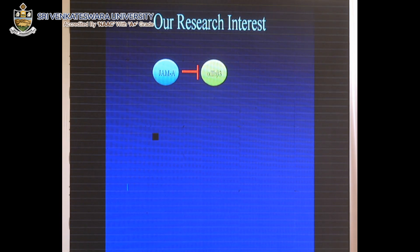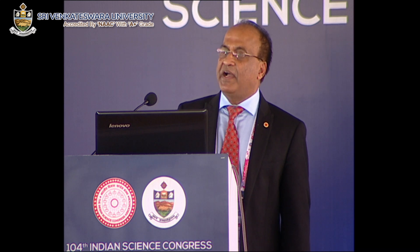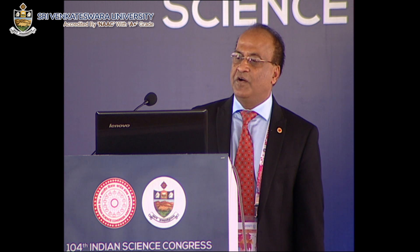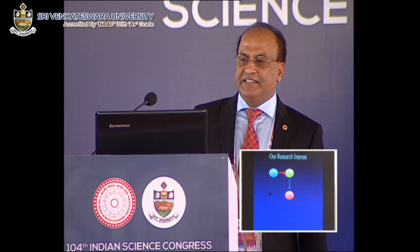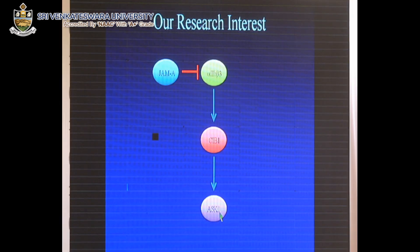However, when there is an injury and we need the platelets to clump, JAM-A is removed, and then the integrin binds to another protein we cloned about 15 years ago called calcium and integrin binding protein (CIB1). CIB1 then binds to another protein that activates the integrin called ASK1 — apoptosis signal-regulating kinase — and that causes aggregation of the platelets.